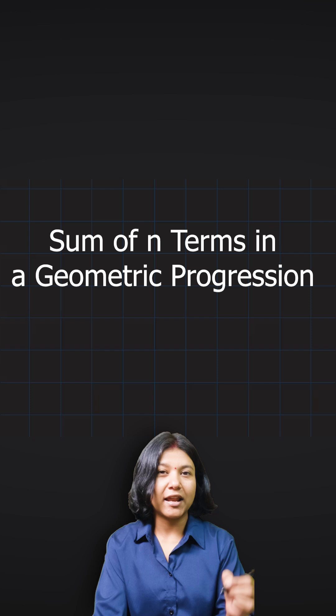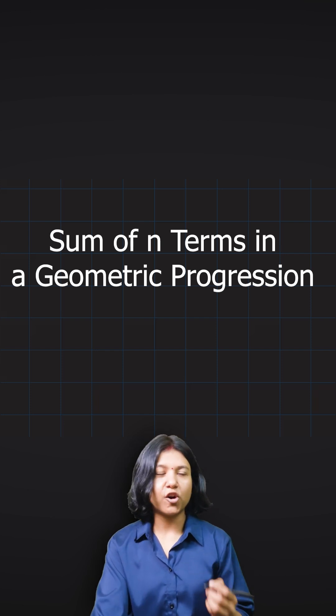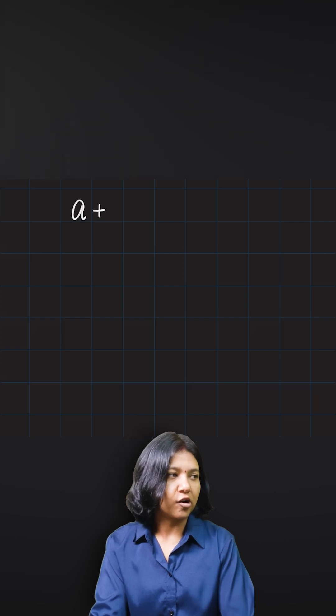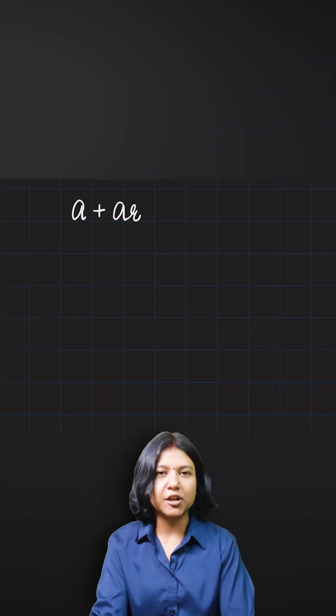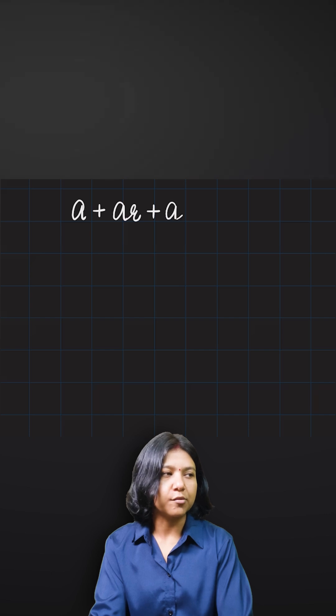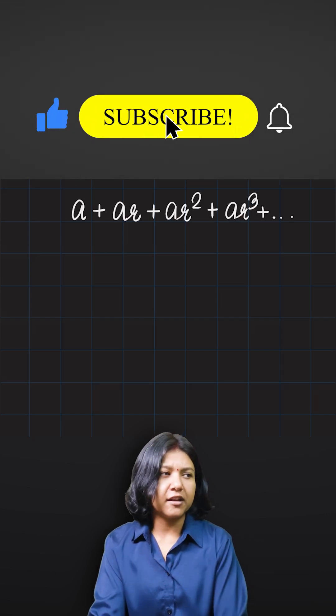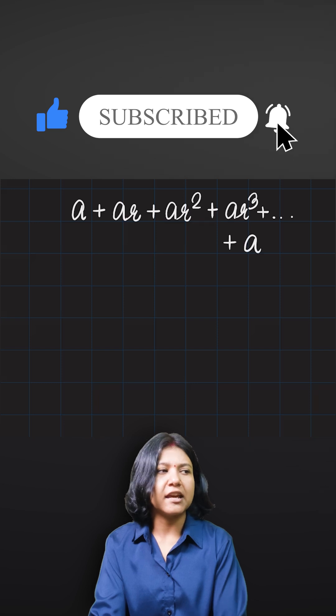A series is when I keep the terms in summation form or in addition form. In a geometric progression, the first term is always a, the second term is obtained by multiplying a fixed value r to the first term, and we keep on multiplying that value. So a, ar, ar squared, ar cubed, and it goes on, where every last term can be represented as a times r to the power of n minus one.